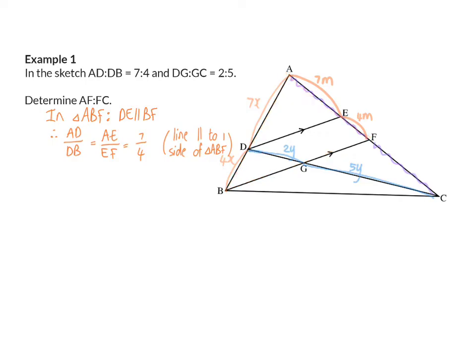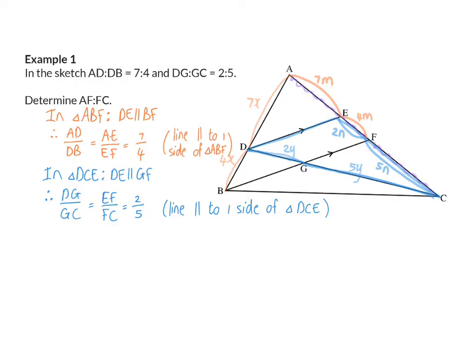The next ratio that was given is DG/GC, so I'm going to work in triangle DCE. In triangle DCE, we know that DE is parallel to GF, and that means we can say that DG over GC is the same as EF over FC, and that will be 2 over 5. Again, my reason: line parallel to one side of the triangle.